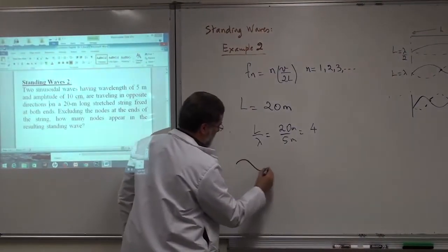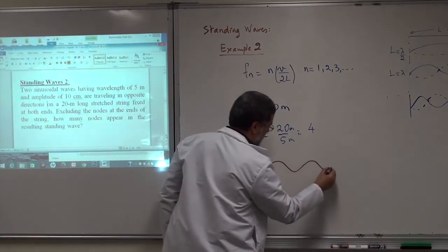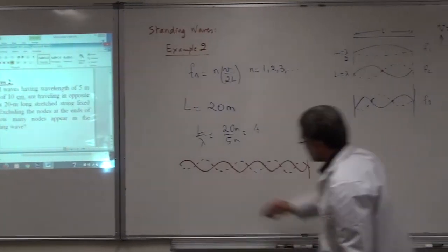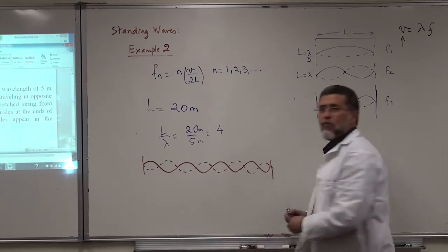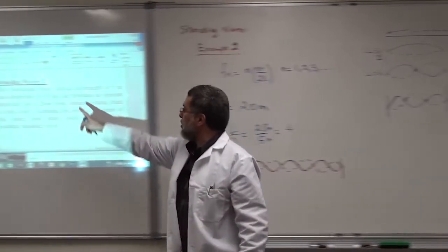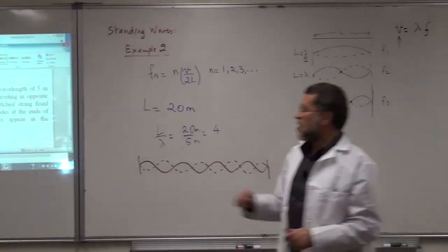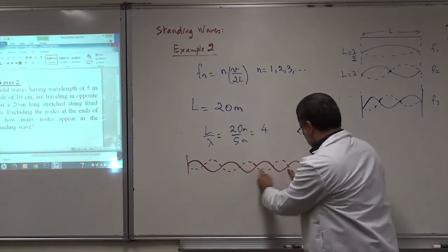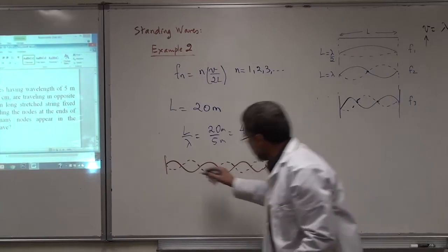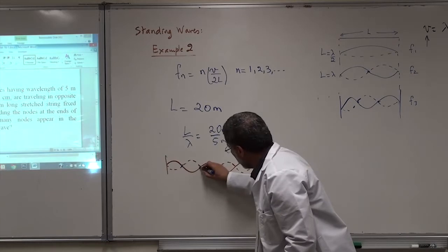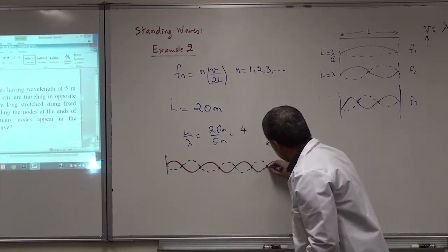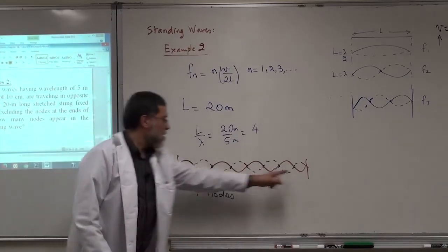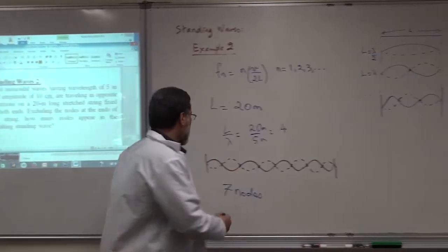Completing the standing wave picture and excluding the two end nodes, I count: 1, 2, 3, 4, 5, 6, 7 — there are seven nodes. The number of anti-nodes is always the number of nodes plus one, so there are eight anti-nodes. Counting confirms: 1, 2, 3, 4, 5, 6, 7, 8 anti-nodes.